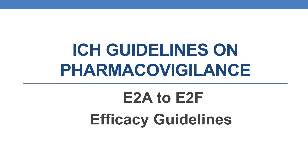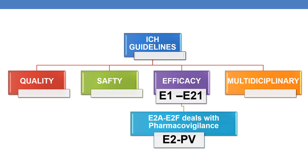Let us discuss ICH guidelines on pharmacovigilance. They mainly come under the efficacy guidelines E2, categorized into E2A to E2F. The ICH has categorized guidelines based on quality, safety, efficacy, and multidisciplinary areas. The major categories are quality guidelines, safety guidelines, efficacy guidelines, and multidisciplinary guidelines. The guidelines for pharmacovigilance come under efficacy guidelines, especially E2.